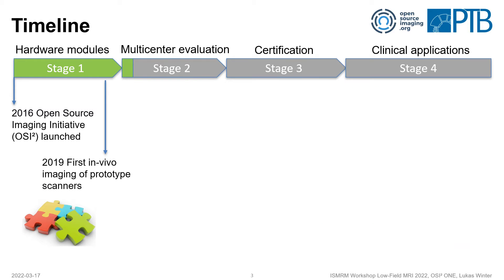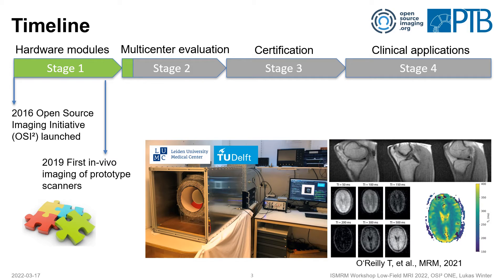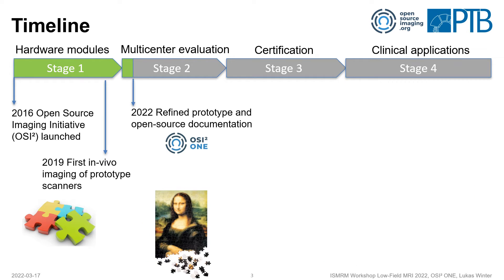Then in 2019 we had some first in vivo imaging of prototype scanners. This was the Leiden-Delft collaboration — a very important milestone with first in vivo images at around 50 millitesla, which looked very promising. This system, as you heard from Tom O'Reilly in the previous talk, was further developed to where we are today, which is the OZ1 system, which is nearly completely based on open source components.